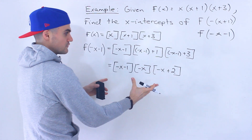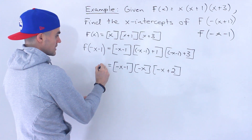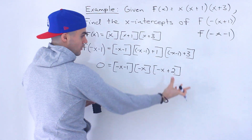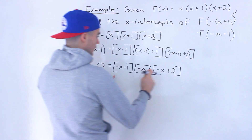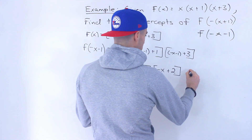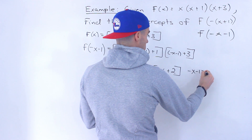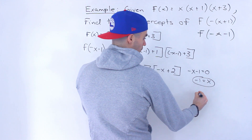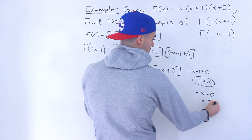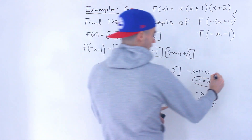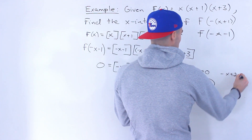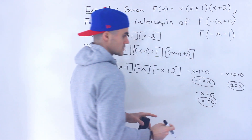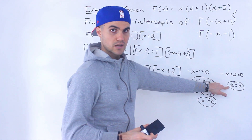From here we can find the x-intercepts, since those are the x values that make the function equal to 0 — basically when each bracket equals 0. When does negative x minus 1 equal 0? That gives x equals negative 1. When does negative x equal 0? That gives x equals 0. And when does negative x plus 2 equal 0? Bringing the negative x over, we get x equals 2. So those are the three x-intercepts.